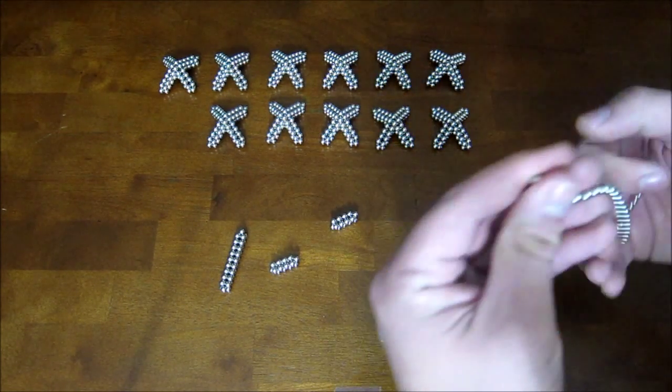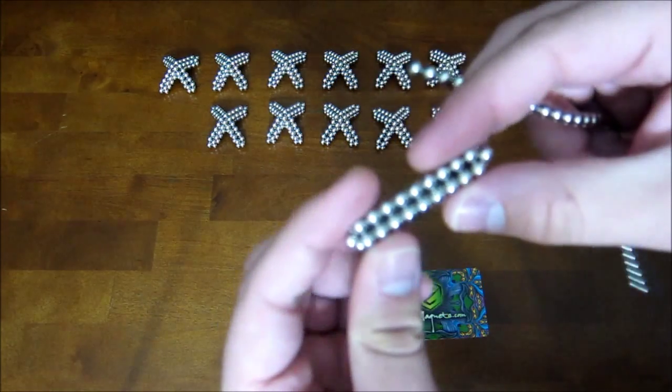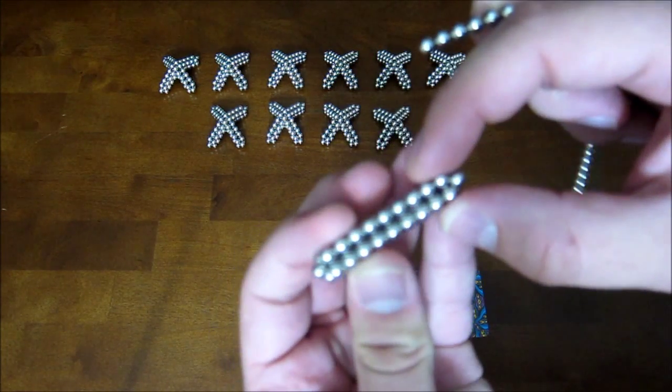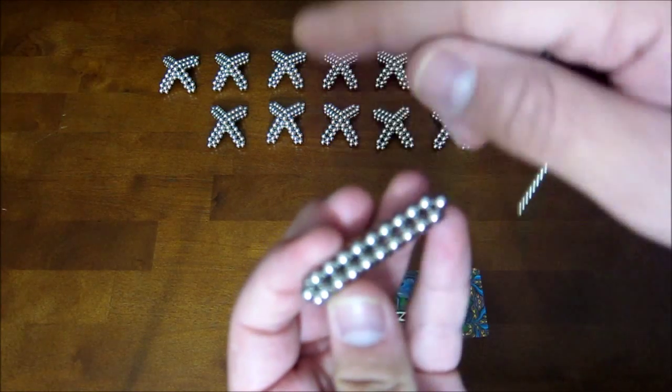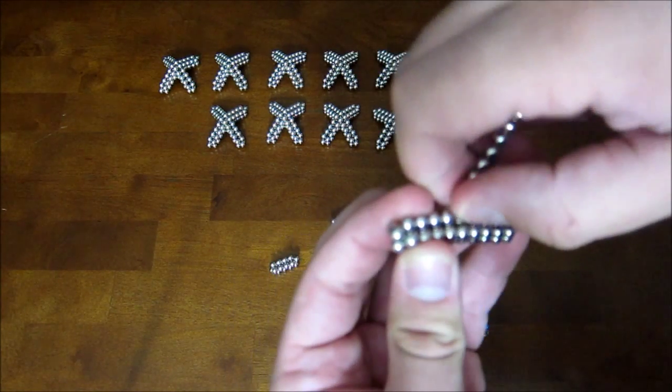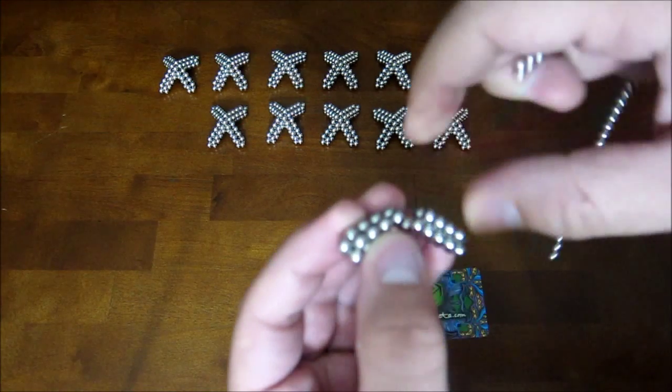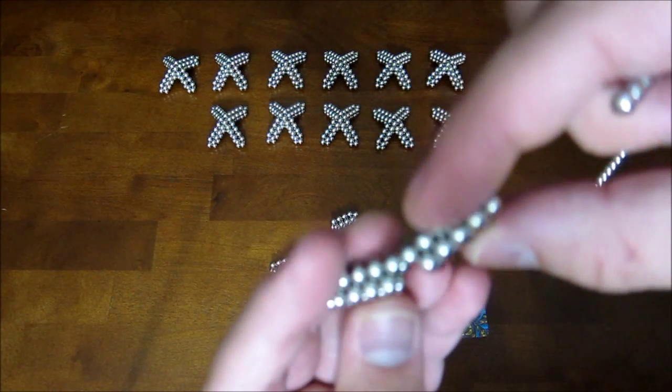And so the first thing that you do is you take this and on the side that ends in points you want to remove the middle two magnets. So it looks like that.